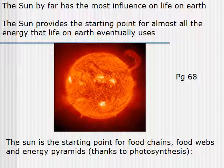By and large, the sun has the most influence on all life on Earth through a single object. You can argue that water has a bigger influence, but water is not a single object — it's thousands of small water molecules. But the sun, by itself as a single entity, provides the starting point for almost all the energy that life on Earth eventually uses. Nearly every food chain you can think of has a starting point with the sun. There are exceptions — things that live in really dark, deep caves or at the bottom of the ocean use geothermal energy — but most food chains and food webs have their starting point with energy from the sun.